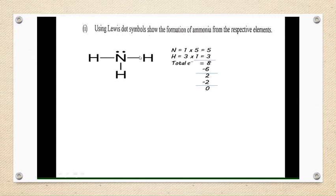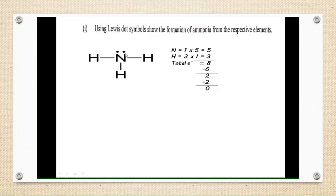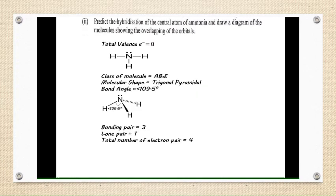For question 8a part 1, using Lewis dot symbols, first we need to calculate the valence electrons. The valence electron of N is 5, and the valence electron of H is 1. N has 1 atom times 5, and H has 3 atoms times 1, giving us a total of 8 valence electrons.